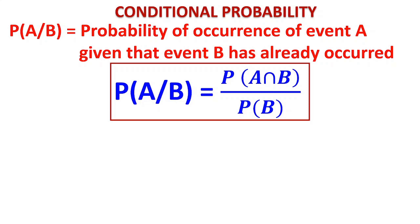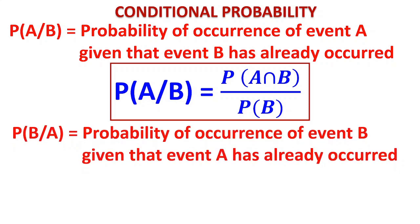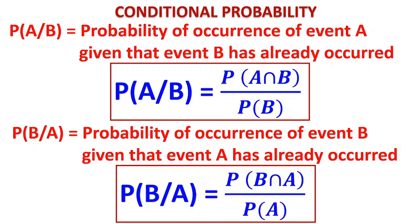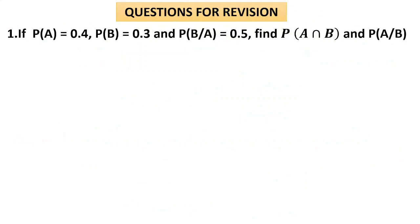Remember the denominator is P(B) because B has already occurred. We can also consider P(B|A): the probability of occurrence of B given that A has already occurred. The formula will be P(B∩A) divided by P(A). Since B∩A is the same as A∩B, the numerator is P(A∩B) and the denominator is P(A), the probability of the event which has already occurred.